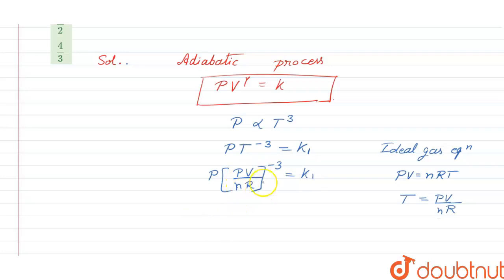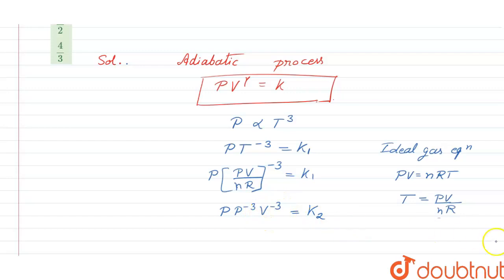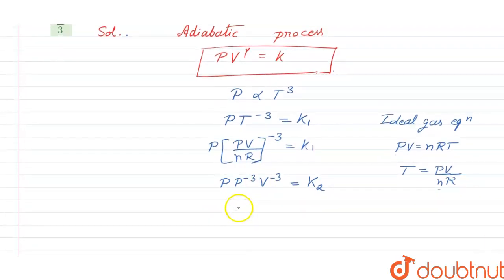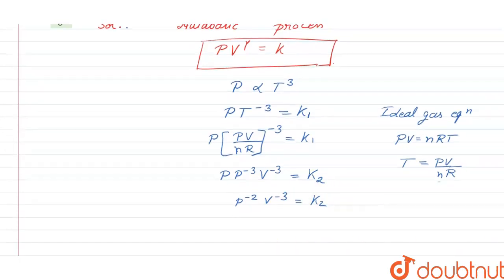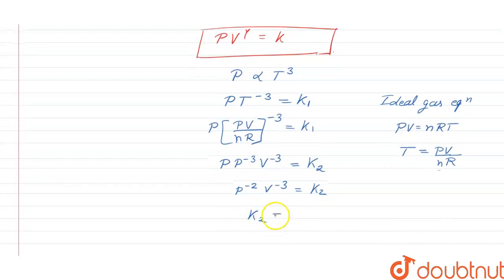Since n and R are constants, we can absorb them into a new constant k2. This leaves us with P⁻²·V⁻³ = k2, which on simplification can be rewritten as PV^(3/2) = k2.